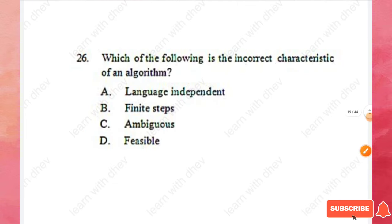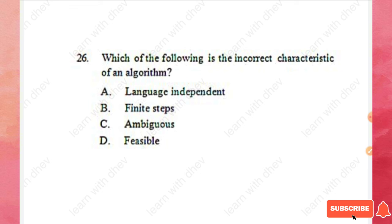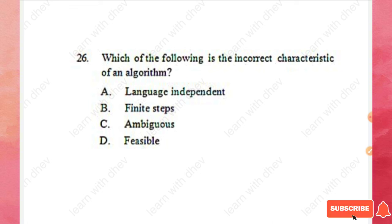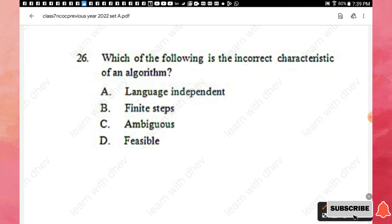Question 26: Which of the following is an incorrect characteristic of an algorithm — language dependent, finite steps, ambiguous, or feasible? The incorrect characteristic is ambiguous, since an algorithm must be unambiguous. Option C is the right answer.